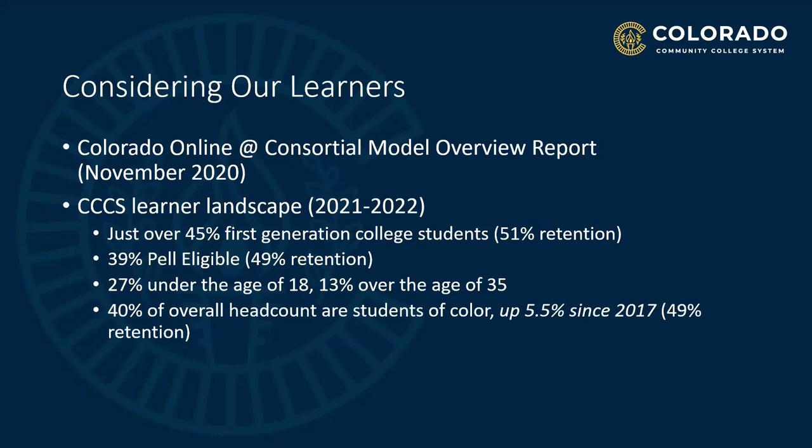Learners identifying disabilities and working with disability access services departments are not called out in our CCCS data book, but the National Center for Education Statistics reports that a little over 19 percent of undergraduate students have disabilities, yet the majority of learners with disabilities do not inform the college. The rate of students actively working with individual college disability and accessibility departments is much lower — one rate reported by a specific Colorado Community College was only 6.1 percent of learners actively collaborating with the College Accessibility Office. Since our student population is diverse on many levels, we needed to ensure that our online course standards reflected this diversity as well.